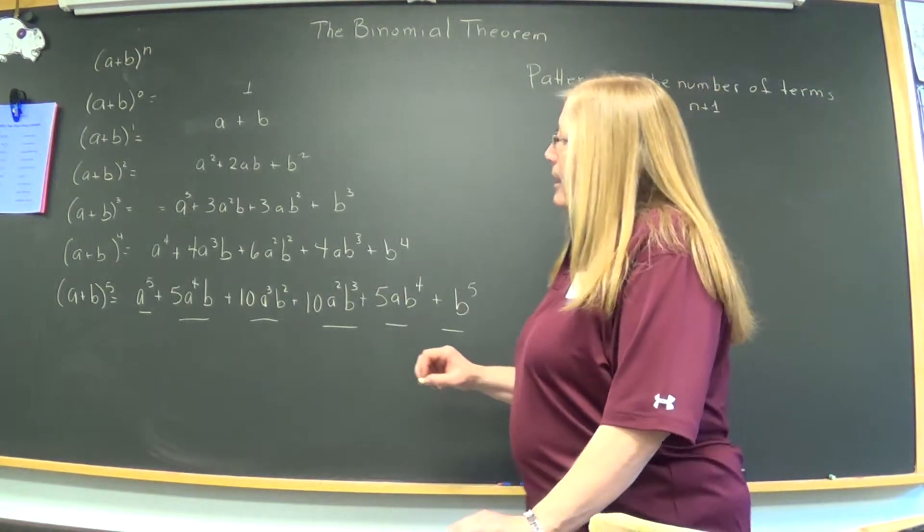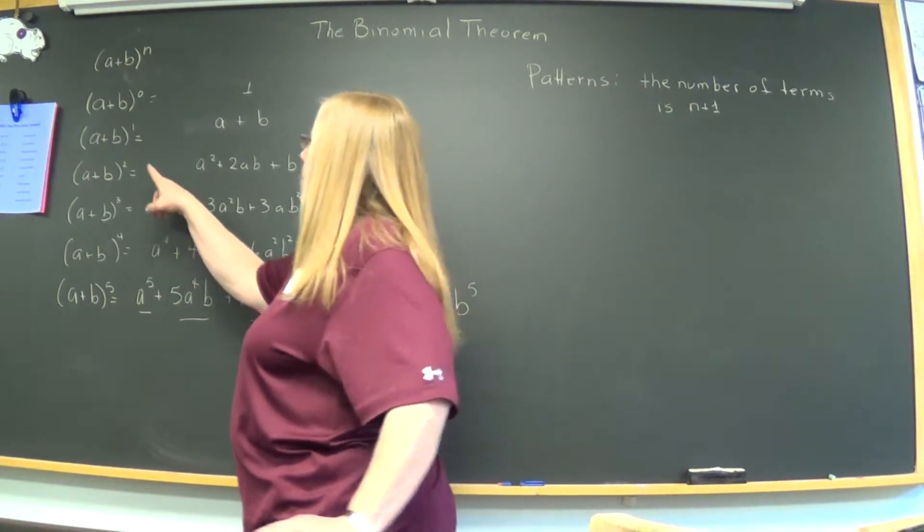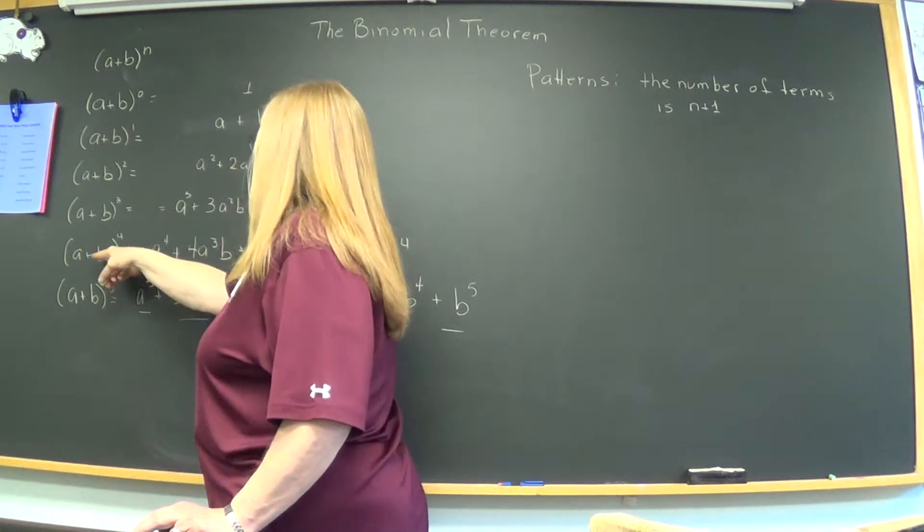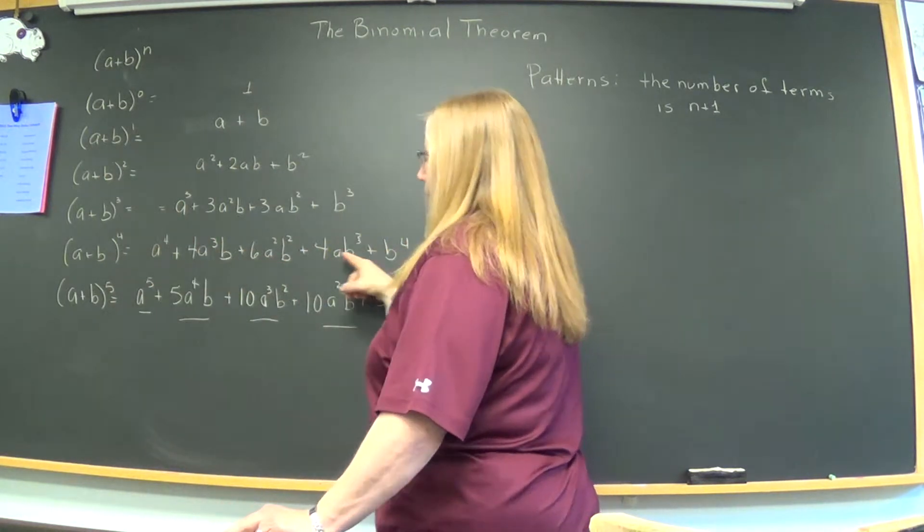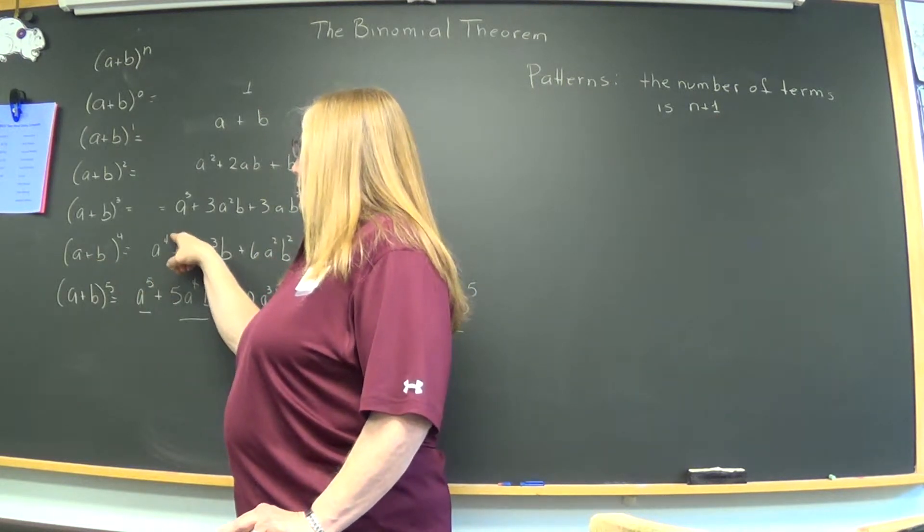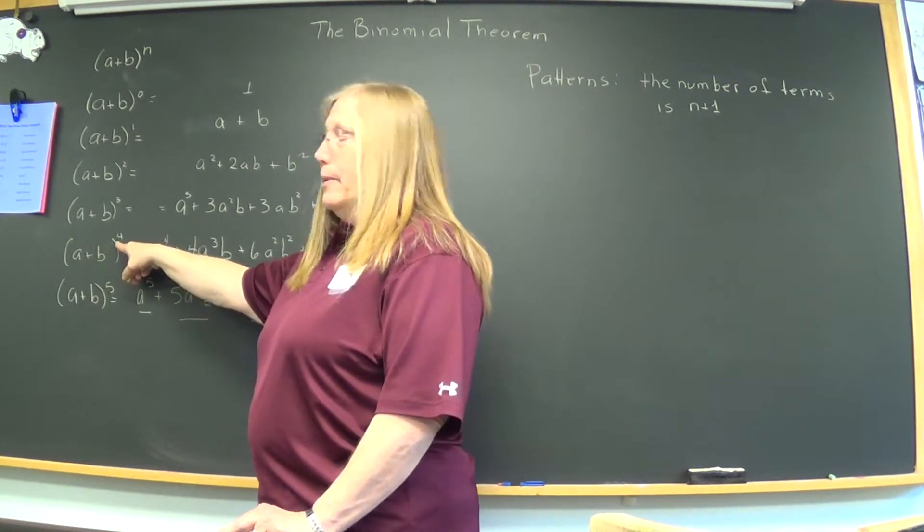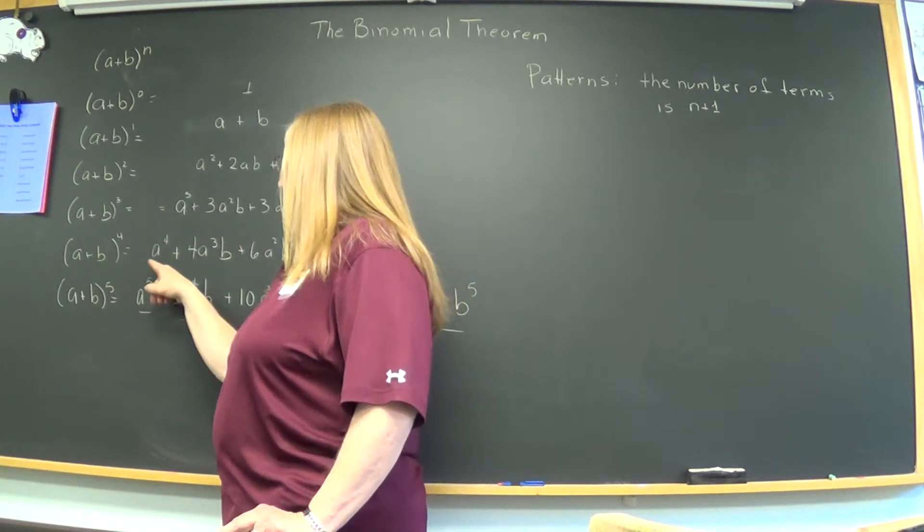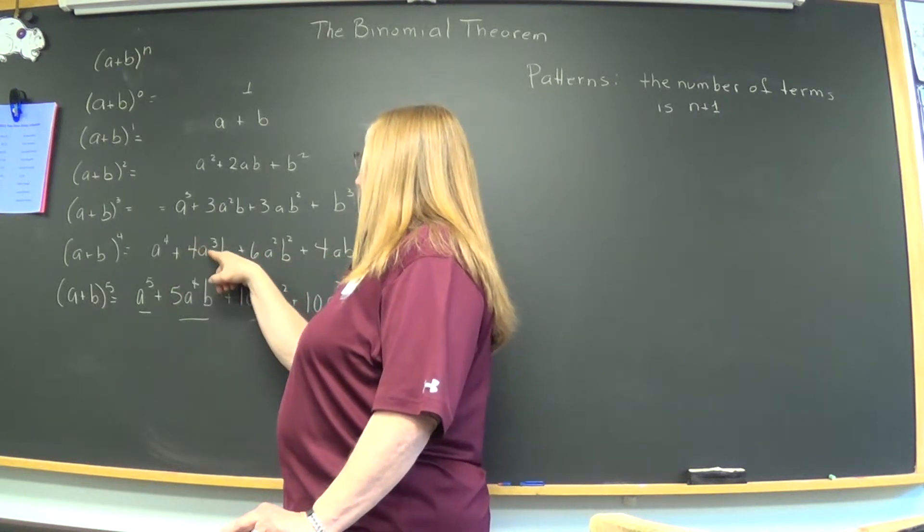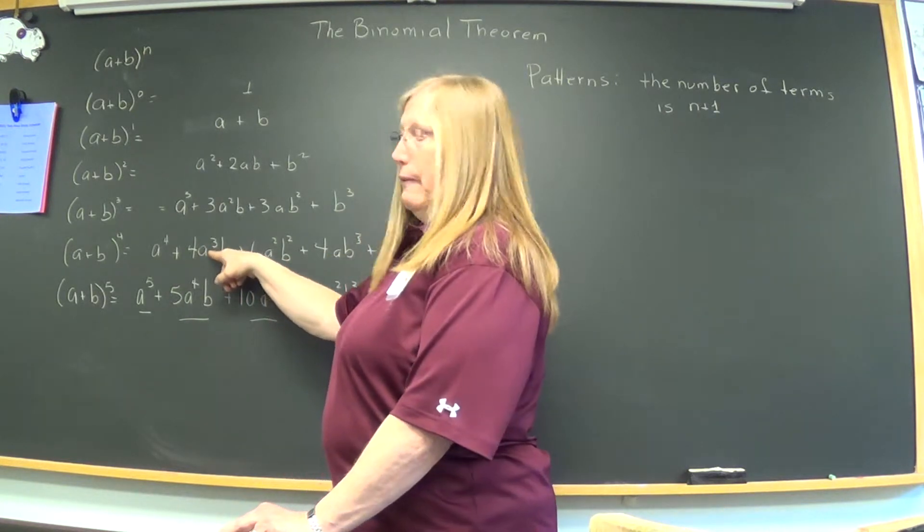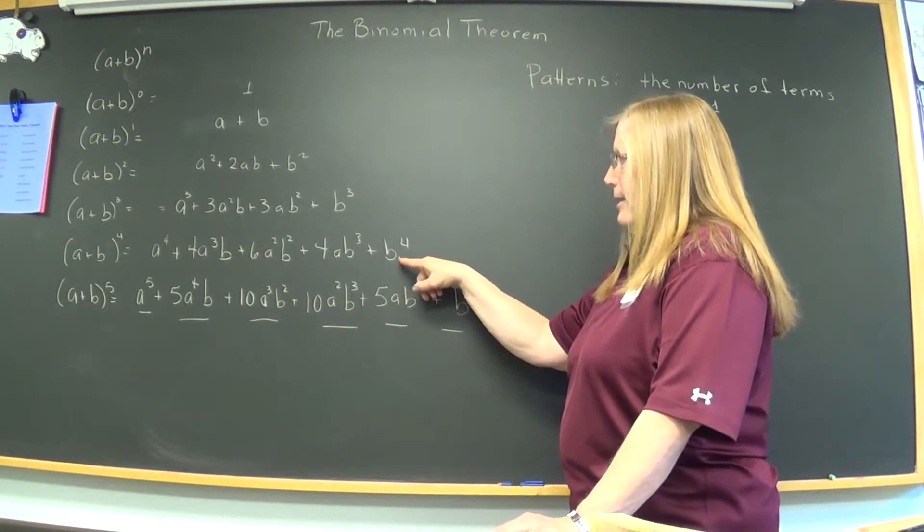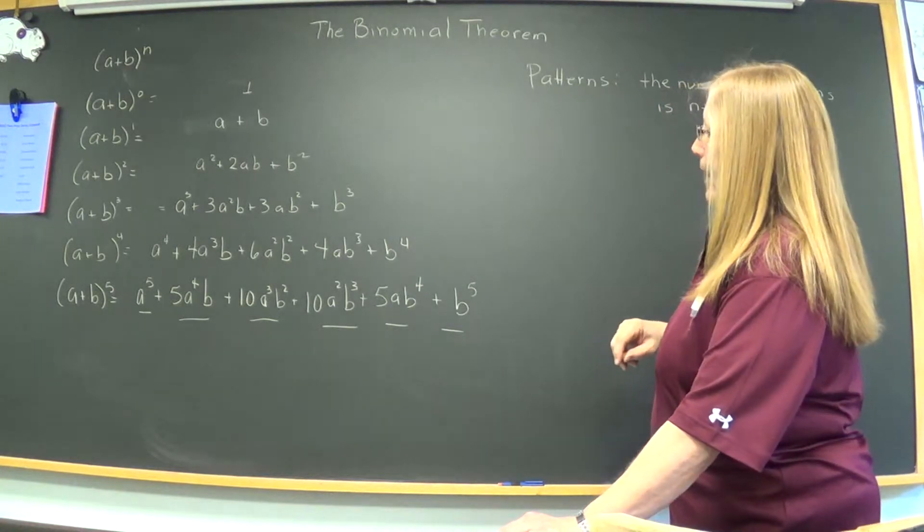Another pattern I observe is when the first term appears, a, when the first term appears, let's look at, say, this row, it'll work on any row. Notice the first term is a, and it's raised to the fourth, which matches the number of the power that we're raising the whole binomial to, and then it begins to descend. Notice four, then three is the next exponent for a, two, one, and then a zero exponent, because a does not appear in that term at all.